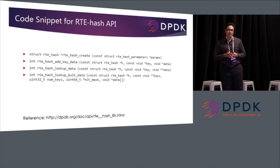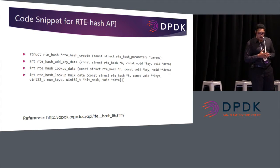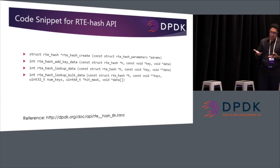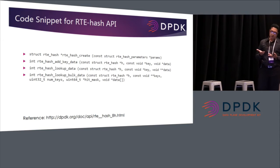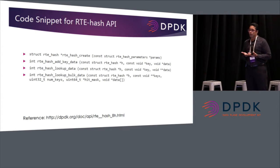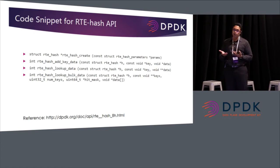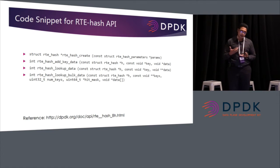Here's a snippet on how to use the RTE hash API. If you want to create a flow table, you call rte_hash_create. Adding a key is simply by calling add_key. There are two lookup functions: one is lookup_data, which looks up one key, but the more efficient one is lookup_bulk, which takes a pointer to a key array and looks up multiple keys at the same time.